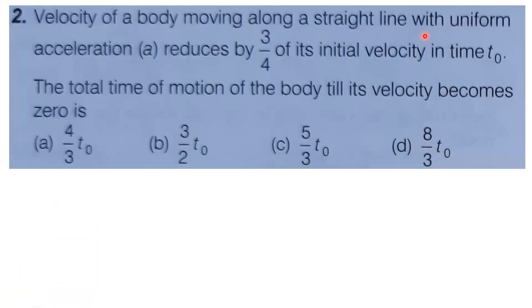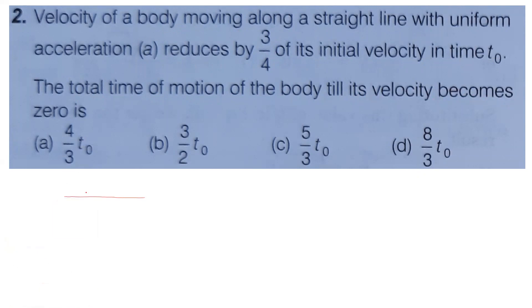Second problem: A body moving along a straight line with uniform acceleration reduces by 3/4 of its initial velocity in time t-naught. Find the total time of motion until velocity becomes zero. The object starts with initial velocity u; in time t-naught, velocity decreases by 3/4 of initial velocity, so remaining velocity is u minus 3u/4 equals u/4.